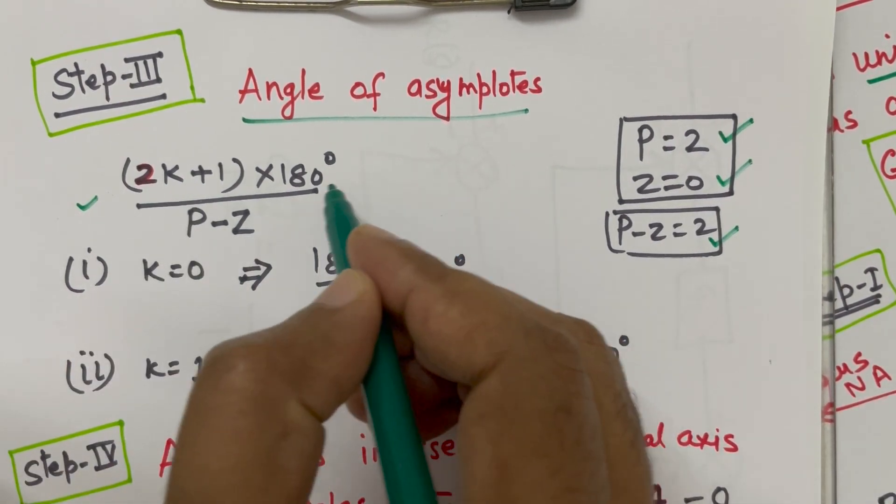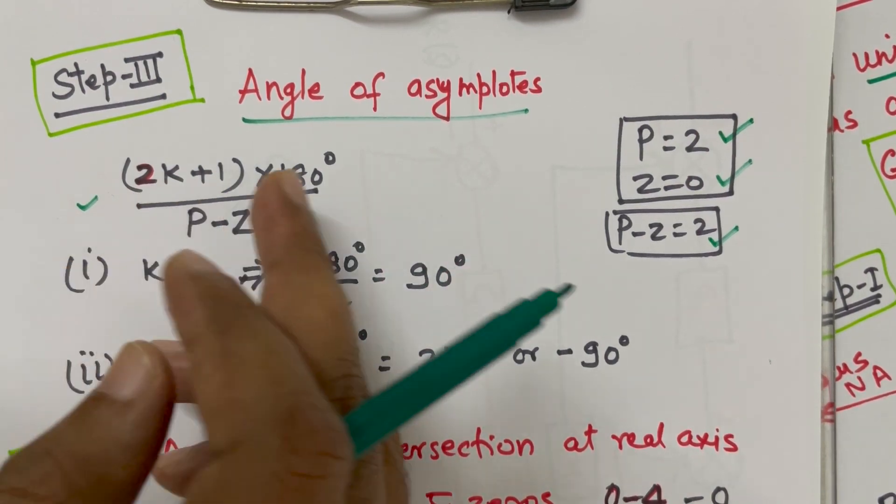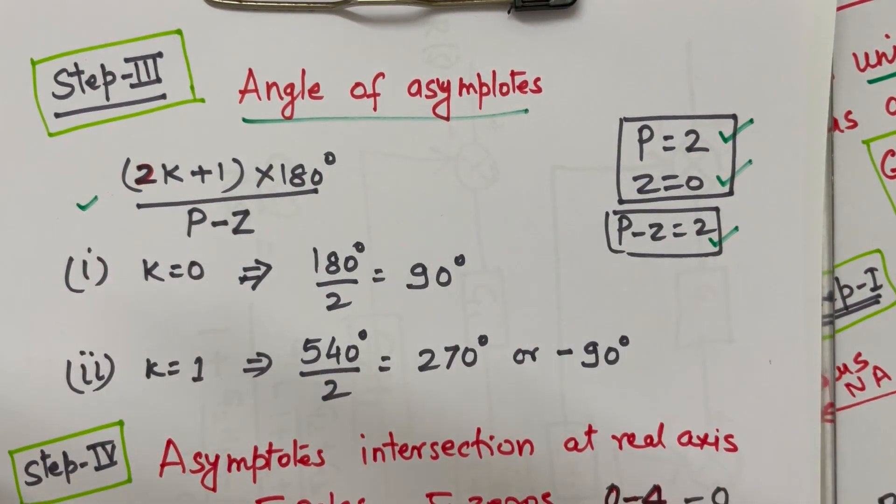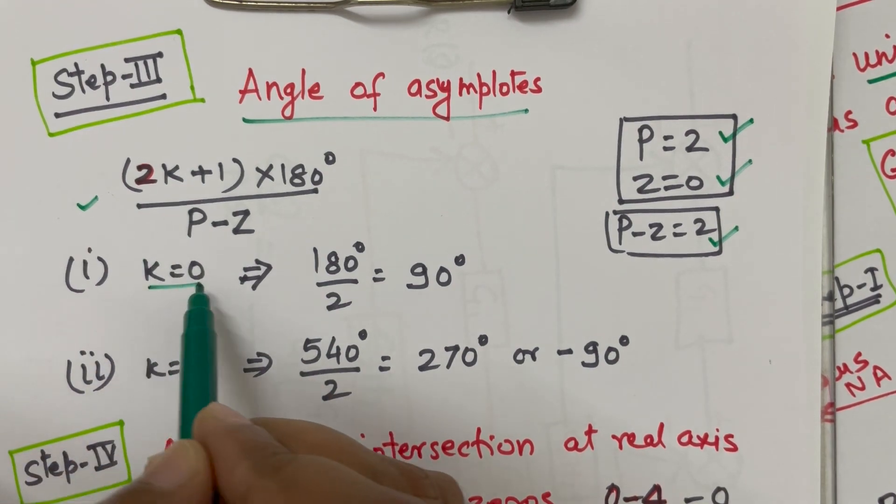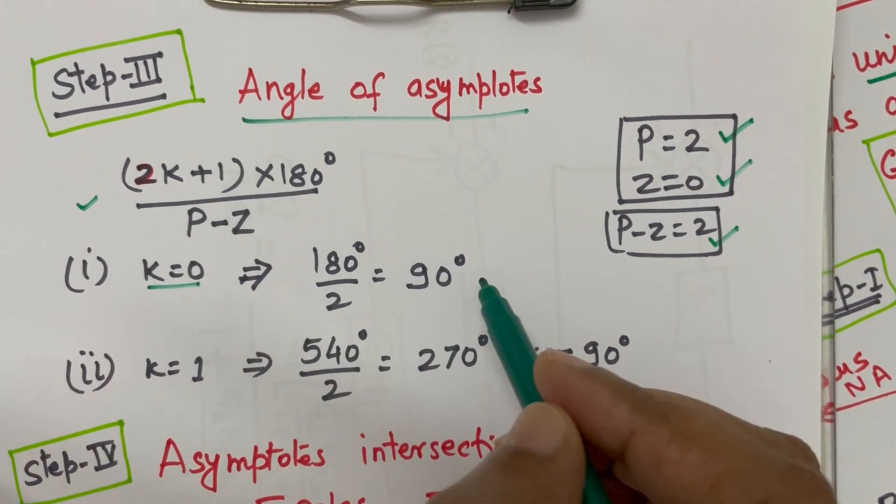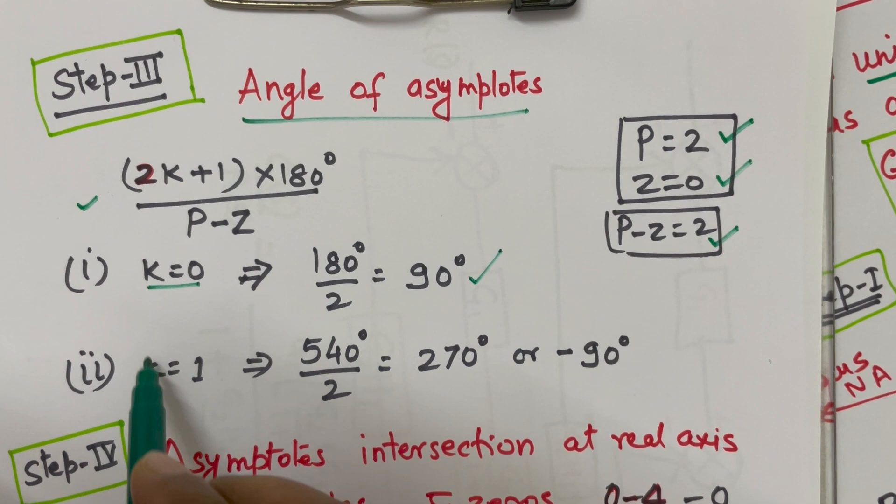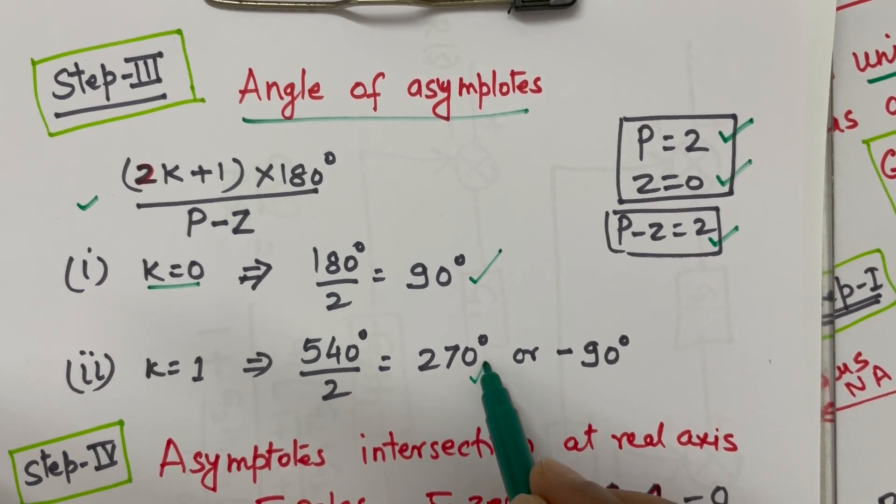This k is small k which will be any number 0, 1, 2, 3 and so on. So, here first we will put k equal to 0. When you put 0, we will get 90 degree. When you put k equal to 1, we get 270 degree which is also equal to minus 90 degree.